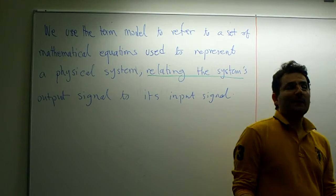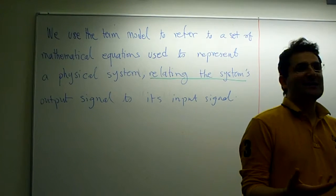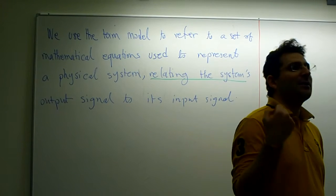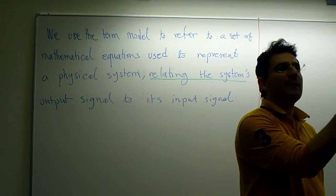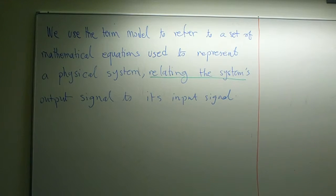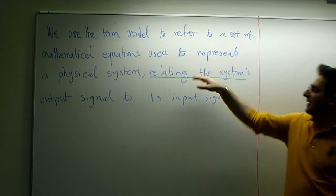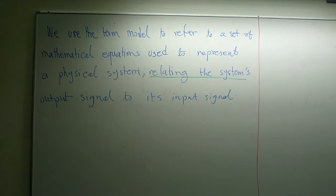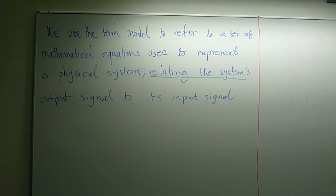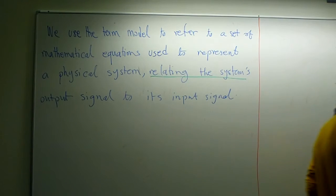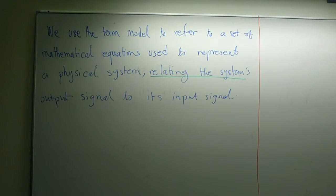But then we come to the fact that in reality this doesn't always work — you cannot give infinity as an input. So we write 'relating the system's output to its input,' but you can read it as predicting what the output is when the input is given.